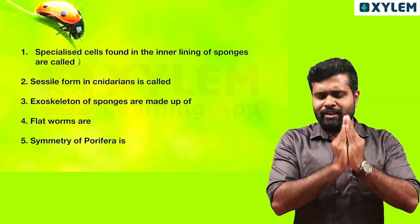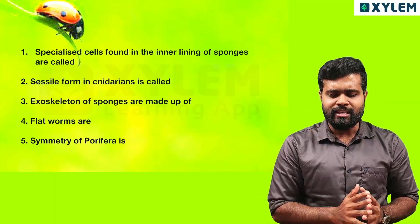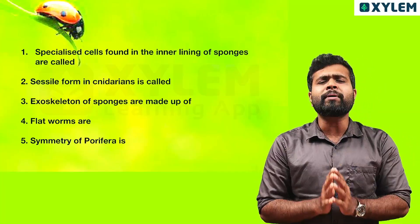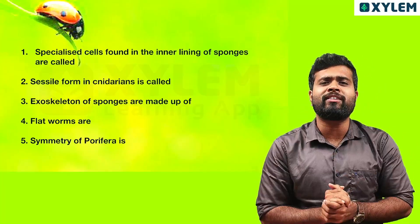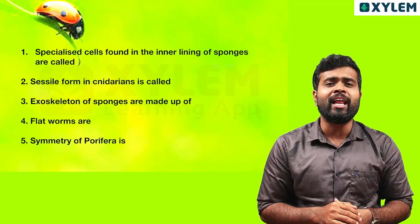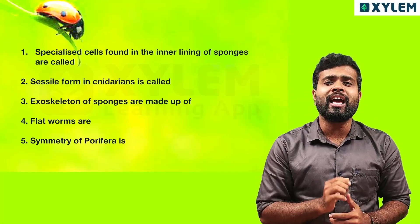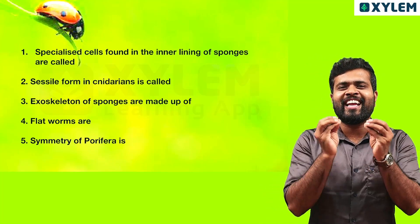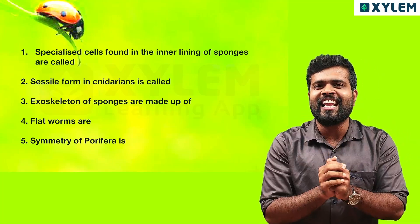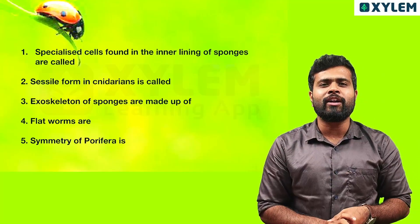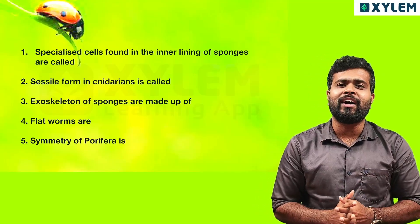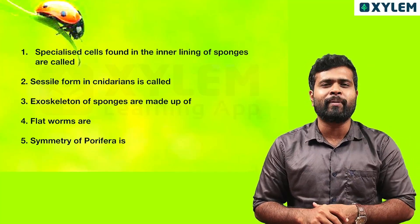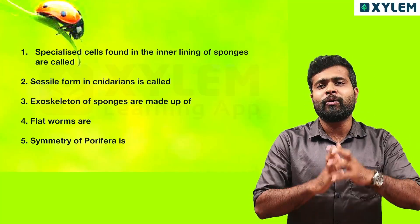The first question is: the specialized cells found in the inner lining of sponges are called what? The answer is choanocytes, that is, collar cells. Choanocytic cells are the same as collar cells — these are the specialized cells found in sponges.